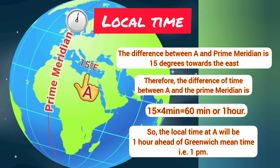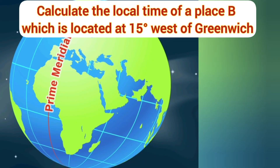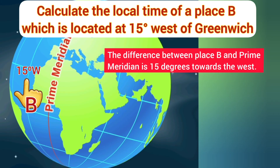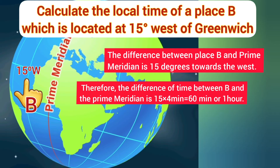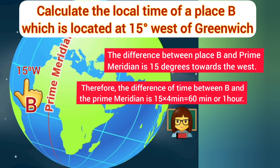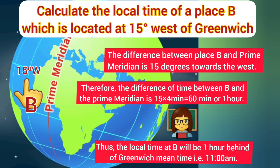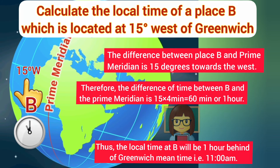Now, can you calculate the local time of place B, which is located at 15 degrees west of Greenwich? You need to follow the same steps. The difference between place B and the prime meridian is 15 degrees towards the west. Therefore, the difference of time is 15 × 4 minutes = 60 minutes, or one hour. One thing to keep in mind: since B is located towards the west of the prime meridian, the local time at B will be one hour behind Greenwich Mean Time — that is, 11 AM.